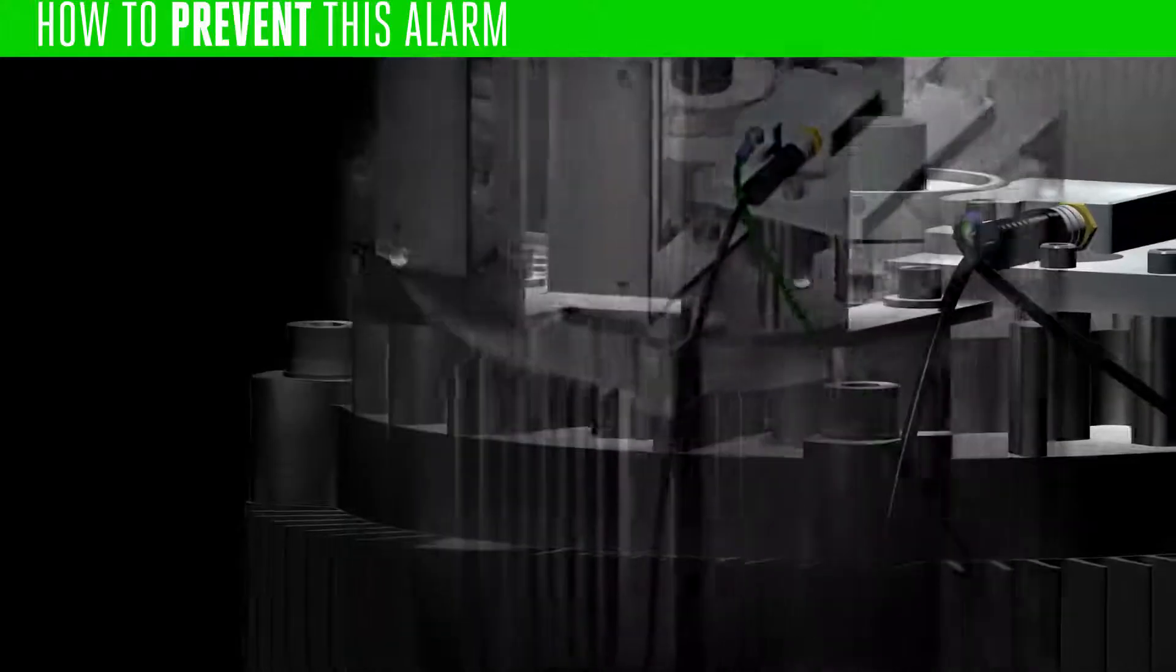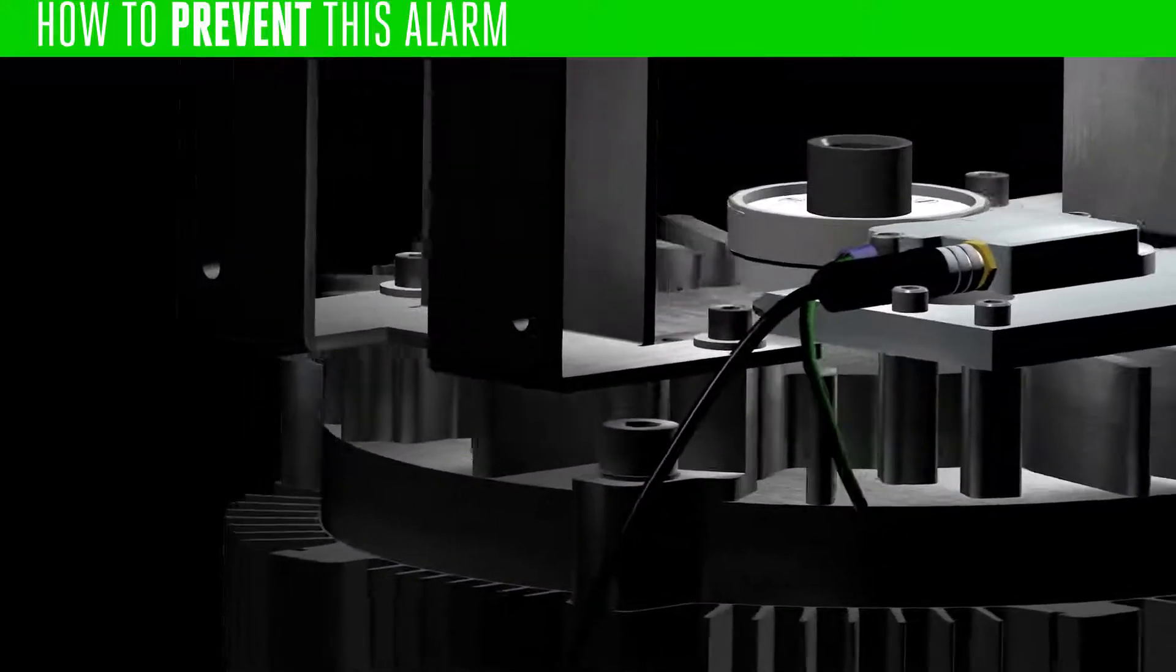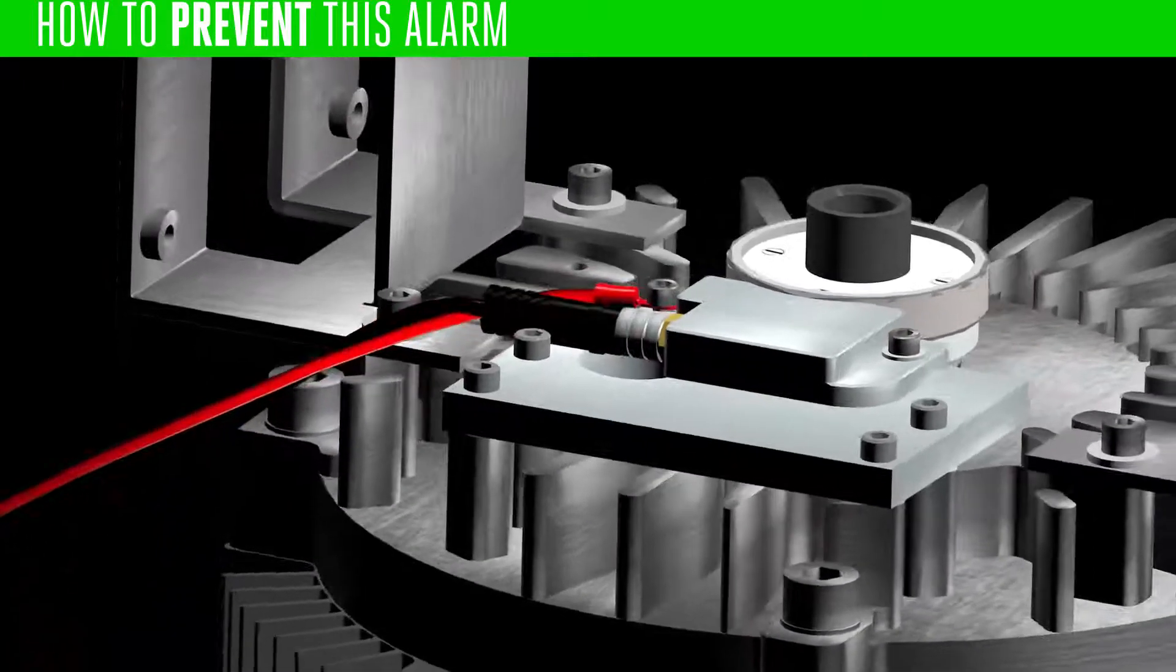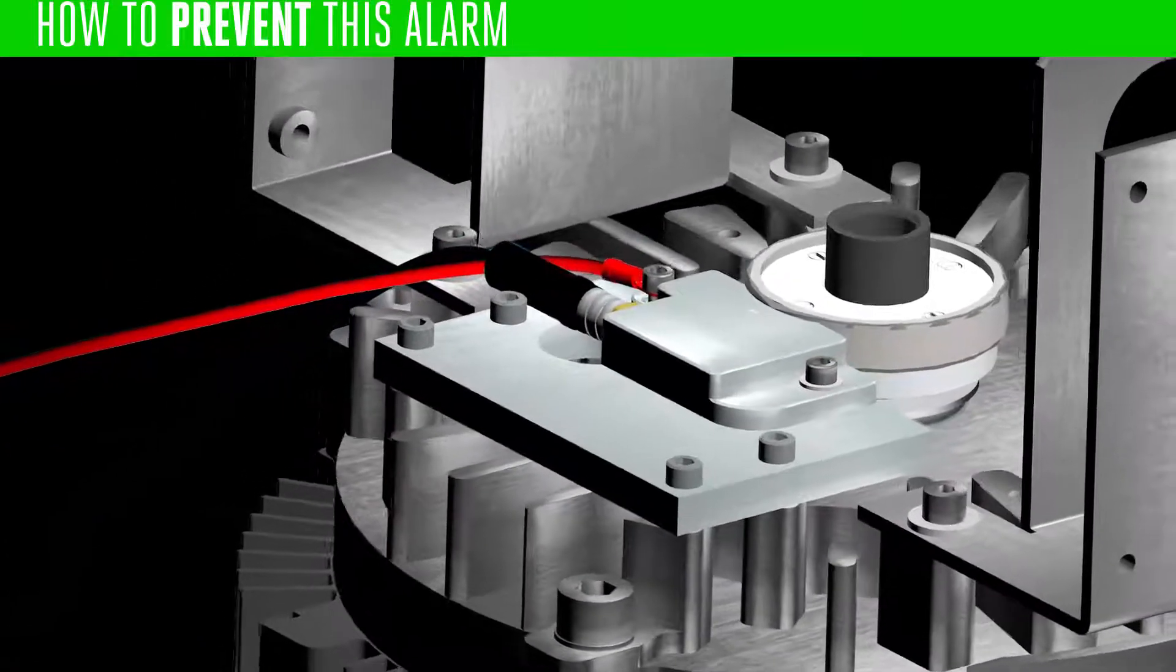Next, take a look at the encoder on the spindle servo motor. Check to see that the encoder cable is firmly attached. Make sure the grounding cable is firmly attached to the spindle head casting.